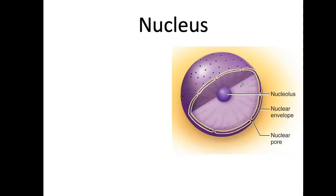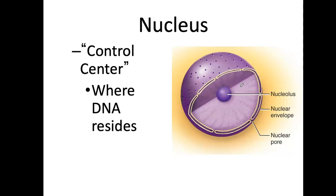The nucleus — it has a nucleus within a nucleus called the nucleolus, and it has an envelope around it. It's really the control center of the cell — this is where the DNA resides. Any protein that needs to be made needs to have that code, and that code lives here in the nucleus.